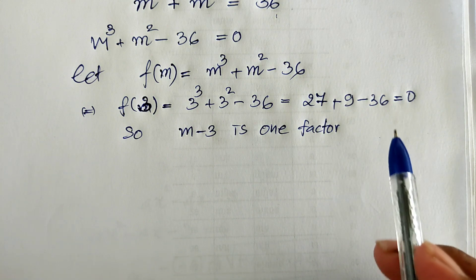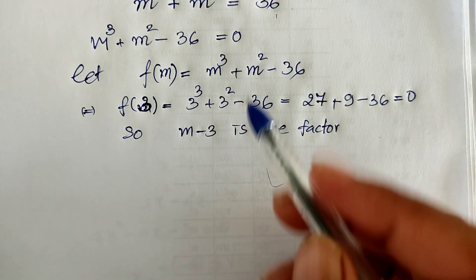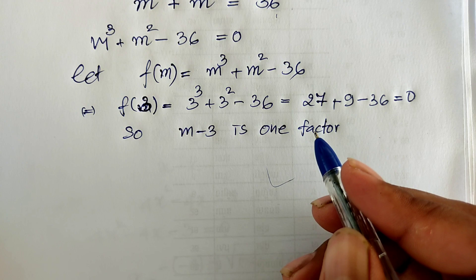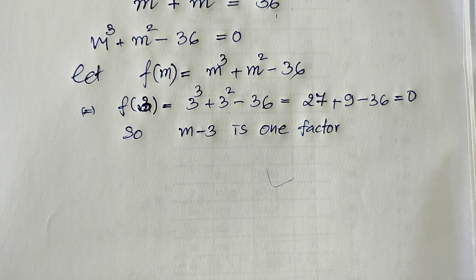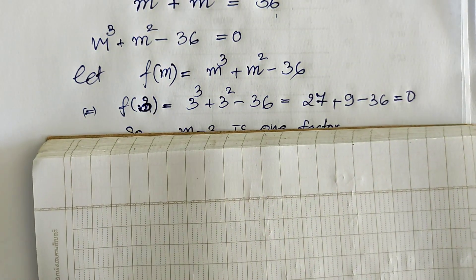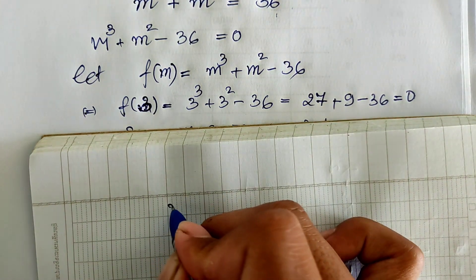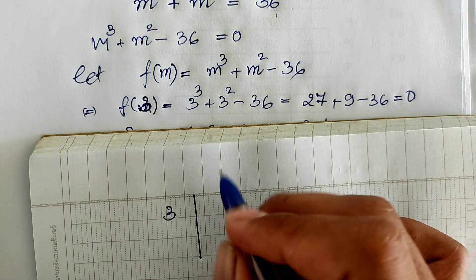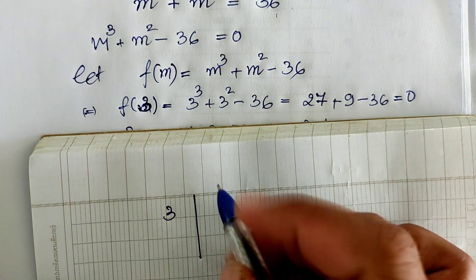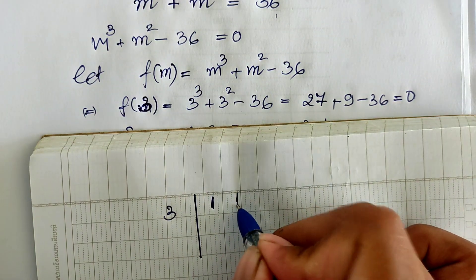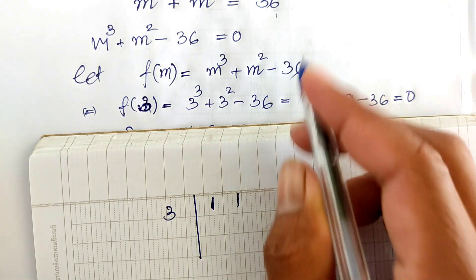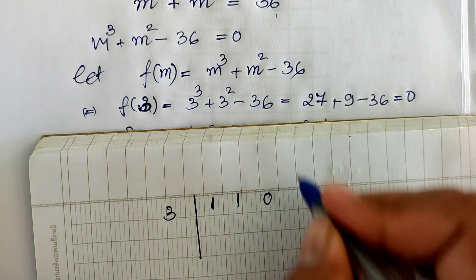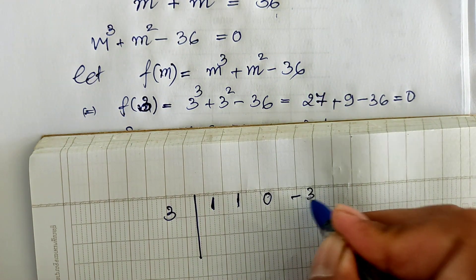We must find the other factor. To find the other factor, we use synthetic division. Since m minus 3 is one factor, we have 3. The coefficients are: m power 3 is 1, m square is 1, and since there is no m power 1 term we write 0, and the constant is minus 36.